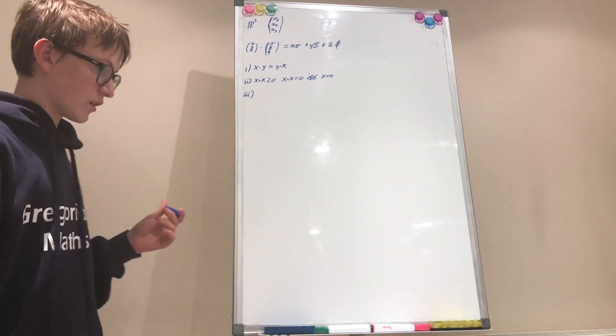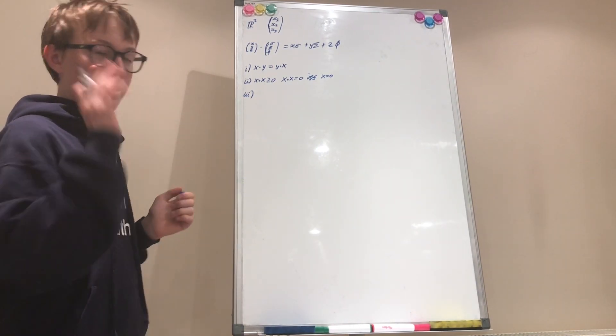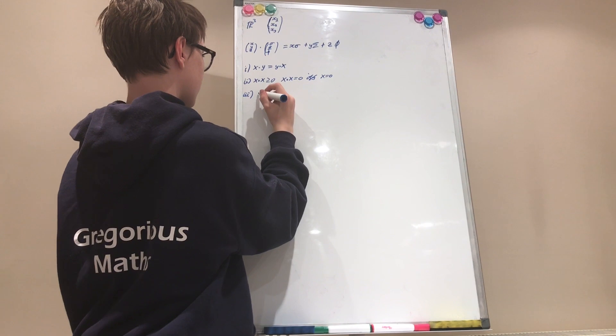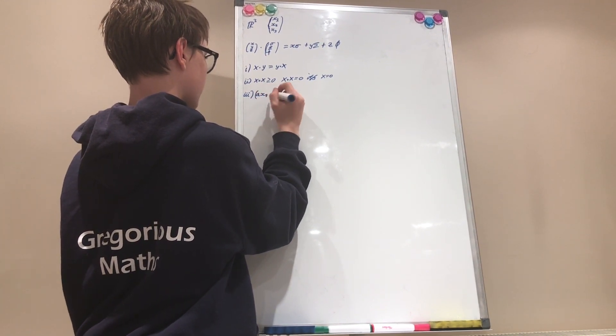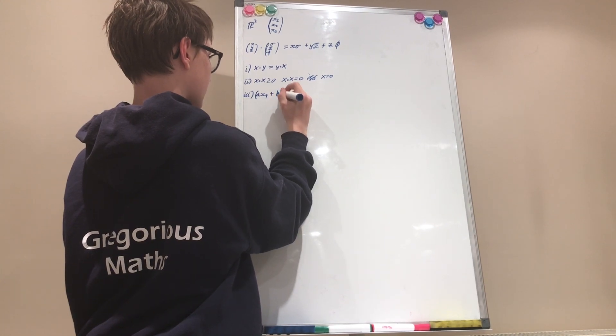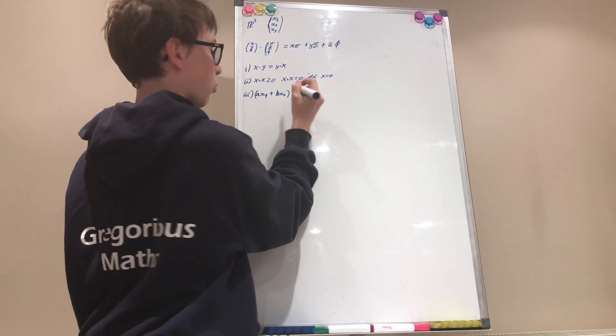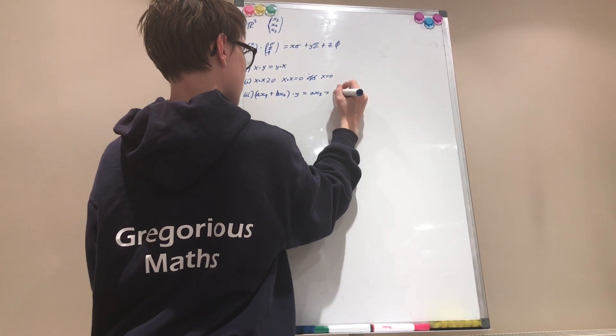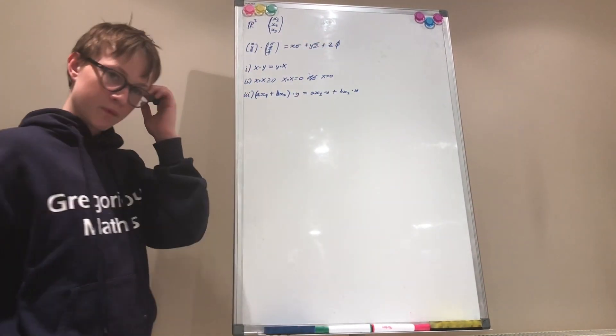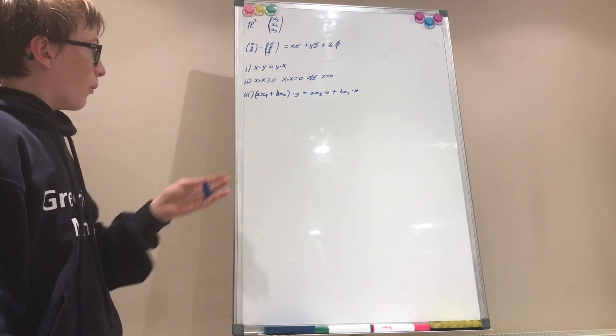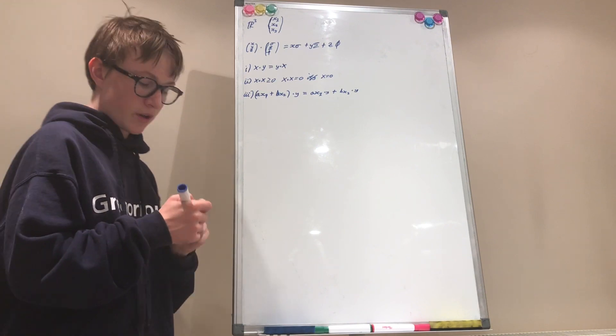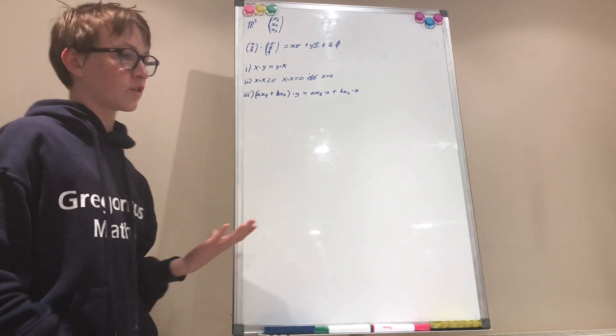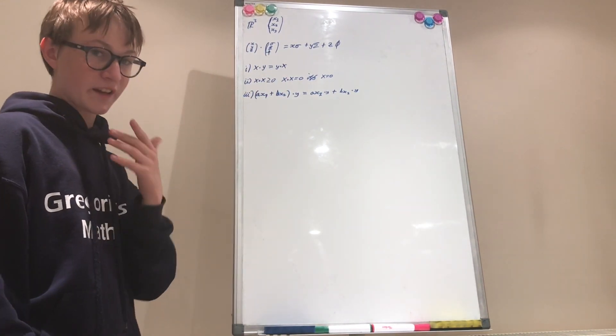Now number three - I forgot what it's called - but basically if we're given ax1 plus bx2 dotted with y, that's equal to ax1 dot y plus bx2 dot y. These are the three axioms for something to be an inner product, and a space defined with this extra structure of an inner product is called an inner product space.